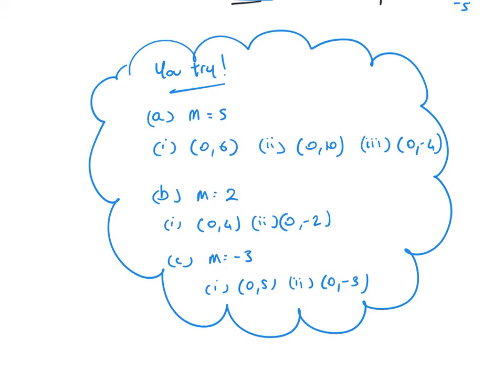Now try these examples. Part A: find the equation of the straight line with gradient 5, passing through (0, 6), then (0, 10), then (0, −4) — so that's three straight lines. Part B: gradient is 2, passing through (0, 4) and (0, −2). And finally, when the gradient is −3, passing through (0, 5) and (0, −3). Altogether you should have 7 straight lines — take the time to try those.